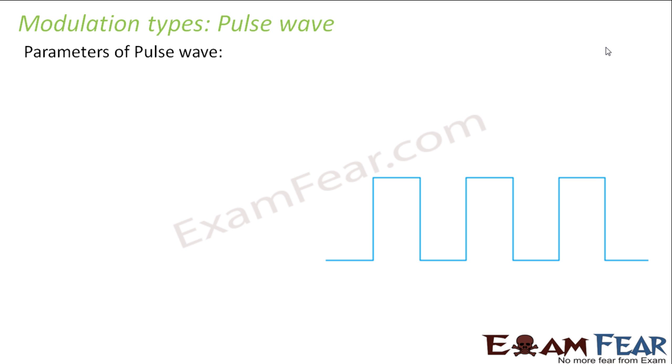Because modulation is nothing but modification of a particular parameter of a wave. So in case of sine wave, those parameters were amplitude, frequency and phase. So let us see what are the important parameters of a pulse wave.